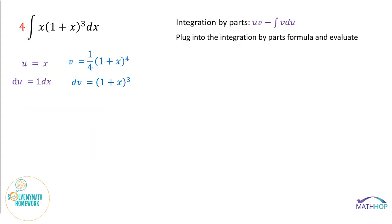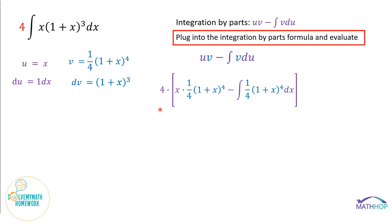Now we're going to plug into the integration by parts formula and evaluate. So uv minus the integral of v du. I'm just going to plug everything in and see where it lands. Remember, I have the 4 on the outside. I don't want to lose that. So my u is my x. v is 1/4 times the quantity 1 plus x to the fourth. So I have u times v minus the integral of v du. And du is just dx. We're not going to put the times 1 because that wouldn't change anything.